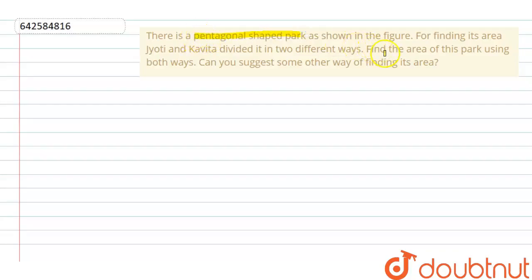Question is: There is a pentagonal shaped park as shown in the figure. For finding its area, Jyoti and Kavita divided it into two different ways. Find the area of this park using both ways. Can you suggest some more ways to finding its area?